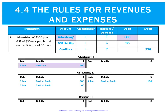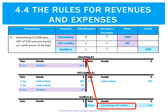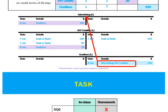Posting that entry: we debit advertising, debit GST, and credit creditors. The debit entries reference creditors, and the credit entry in creditors references two ledgers — advertising and GST liability.